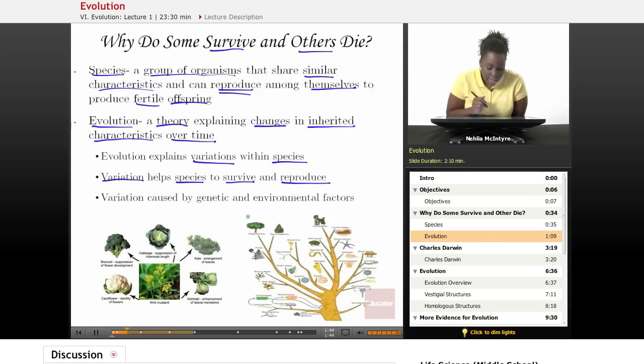And variation helps the species to survive and to reproduce. Because variation is caused by genetic and environmental factors, but the more variation you have within a species, the better they're able to adapt to changing environments and dramatic changes in the environment.